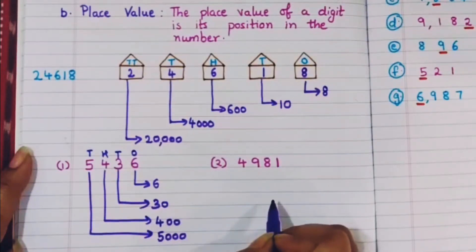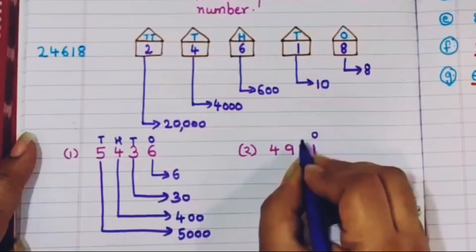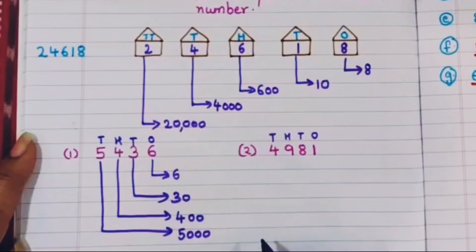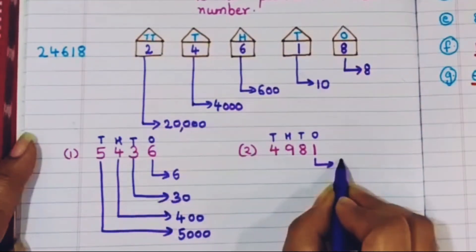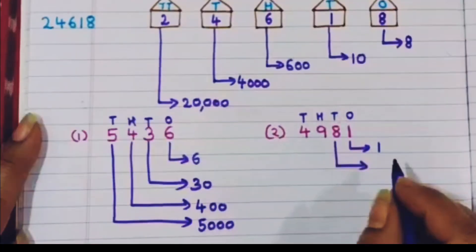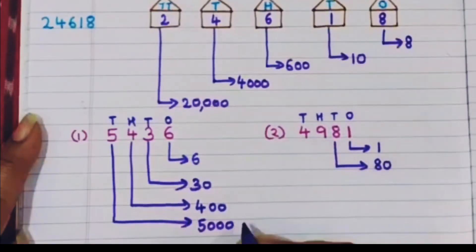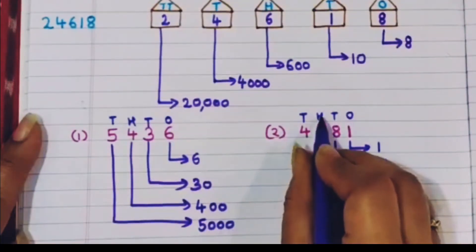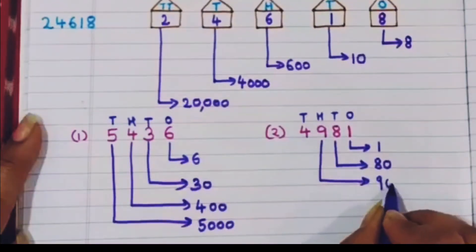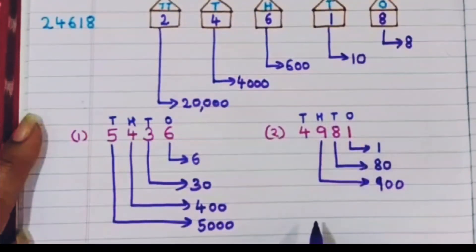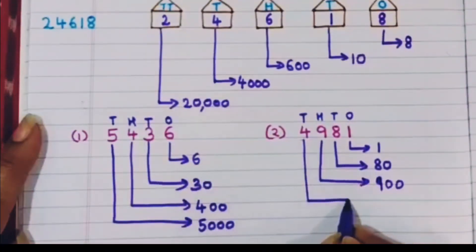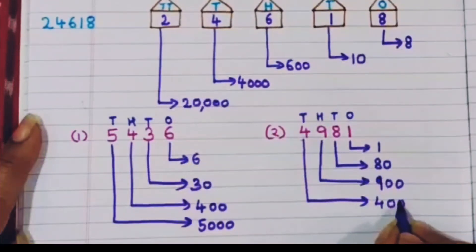One more example: 4981. Placing them in their houses — 1's, 10's, 100's, and 1000's. The place value of 1 is 1. The place value of 8 is 80, since 8 is in the 10's place. The place value of 4 is 4000, since 4 is in the 1000's place.